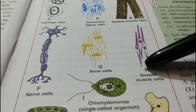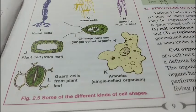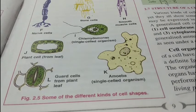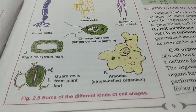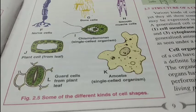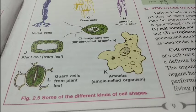Smooth muscle cells are spindle-shaped. Plant cells are almost rectangular. Amoeba cells are irregular in shape with pseudopodia — the false feet — which help them move from one place to another. White blood cells are amoeboid in shape. Nerve cells are long, and muscle cells are long and contractile. Guard cells are bean-shaped.